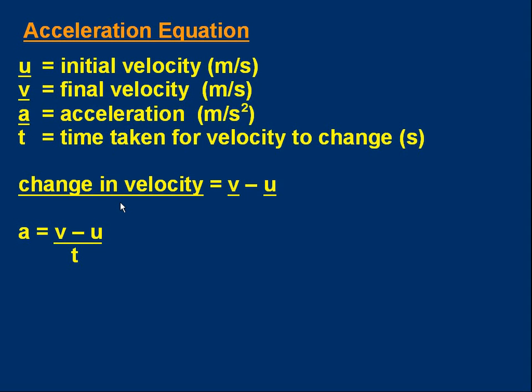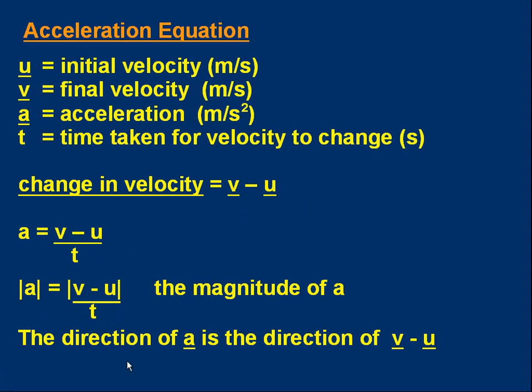As we saw in part one, the change in velocity is the final value minus the initial value. v minus u gives you the change in velocity. If we divide that by time, we get acceleration. And I've done that in the formula, but you'll note I've left the underlining out. To keep it neater, we'll not bother putting the underlines in most of the time. Just a quick reminder, the magnitude of acceleration is simply the magnitude of v minus u, the change in velocity divided by the time. And the direction of the acceleration is the same as the direction of the velocity change. It's the direction of v minus u.